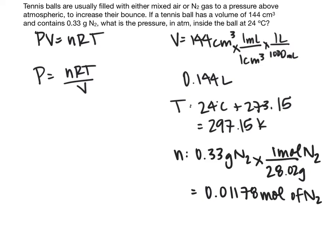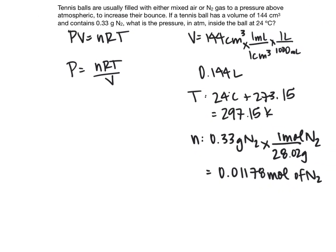Now we can start plugging this into our calculation. N is 0.01178 moles of N2, and R is 0.08206 liters atmospheres per mole Kelvin.